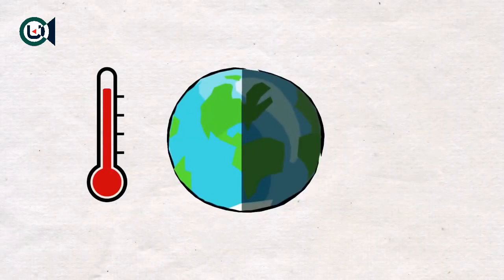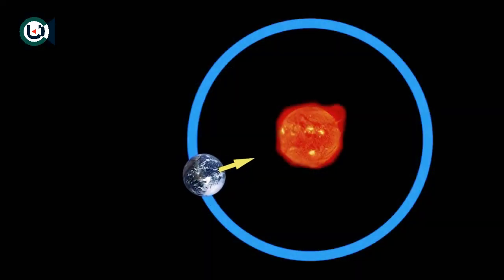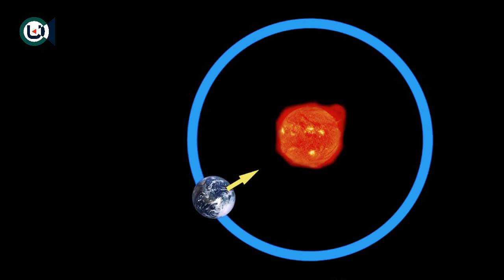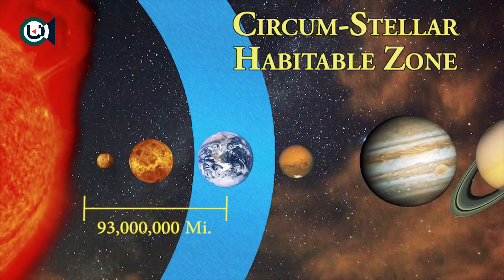Our tidally locked Earth would have half of the planet always facing the sun, and the other half would be in permanent darkness. Currently, our planet is in what is called a Goldilocks zone, or habitable zone, where it is the perfect distance from our sun in order to support life.